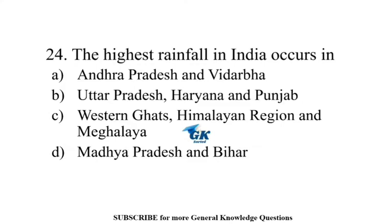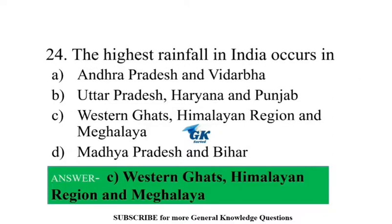The highest rainfall in India occurs in the Western Ghats, the Himalayan region, and Meghalaya.